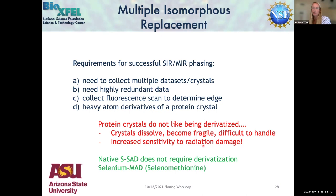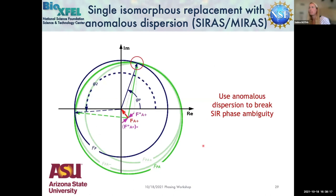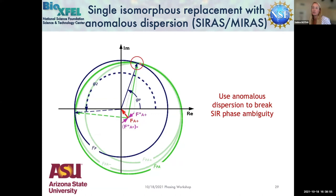We can also combine isomorphous replacement and anomalous scattering: if we already have the heavy atom in the crystal and we measure above the absorption edge, the anomalous contribution adds on top of the SIR phases, ideally resolving to one possible phase angle. This is called SIRAS (Single Isomorphous Replacement with Anomalous Scattering). Adding multiple wavelengths gives MIRAS (Multiple Isomorphous Replacement with Anomalous Scattering), which works well when we have good quality data.